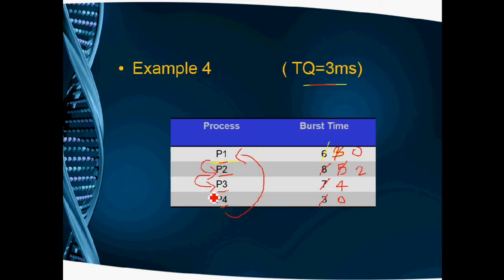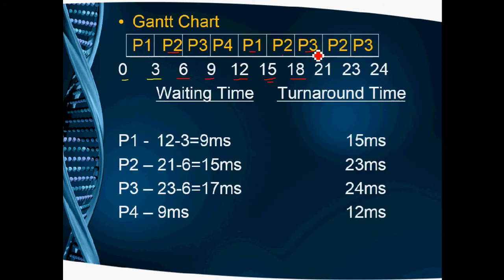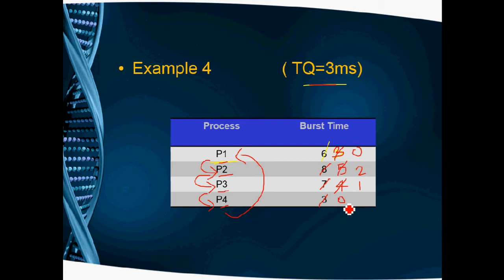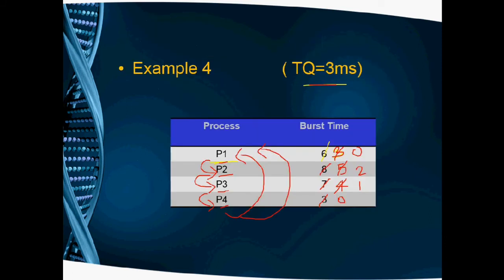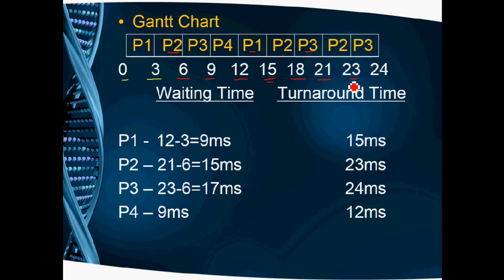Next is P3 with a balance of 4 milliseconds. Since time quantum is 3, P3 executes 3 milliseconds. P3 starts at 18 and runs to 21 milliseconds, with 1 millisecond remaining. P4 is skipped as its remaining time is already 0. Back to P2, which has 2 milliseconds remaining — less than the time quantum — so it fully executes. Then P3 executes its final 1 millisecond.